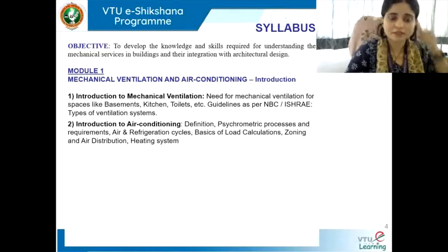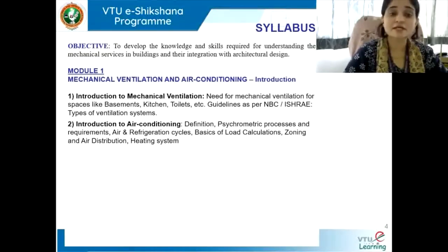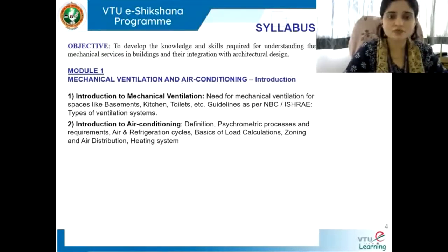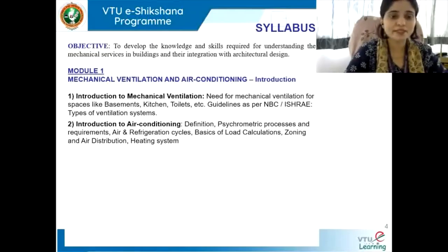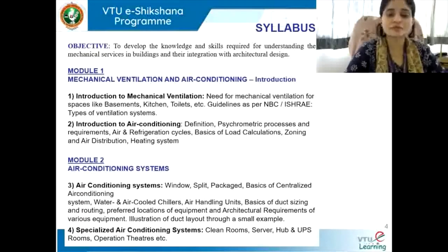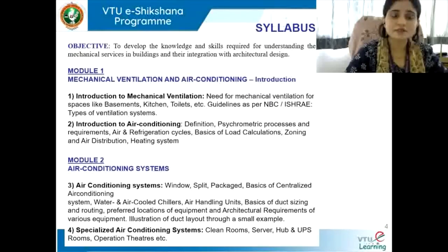Module 1 will deal with mechanical ventilation and air conditioning. It begins with an introduction to the course — understanding what mechanical ventilation means and the various types available. The second part of the module gives a basic understanding of various aspects of air conditioning in a building, for example, psychrometric processes, load calculations, zoning, etc. Module 2 will directly address the various air conditioning systems available for various kinds of buildings. These are the main aspects we will look at in Modules 1 and 2.